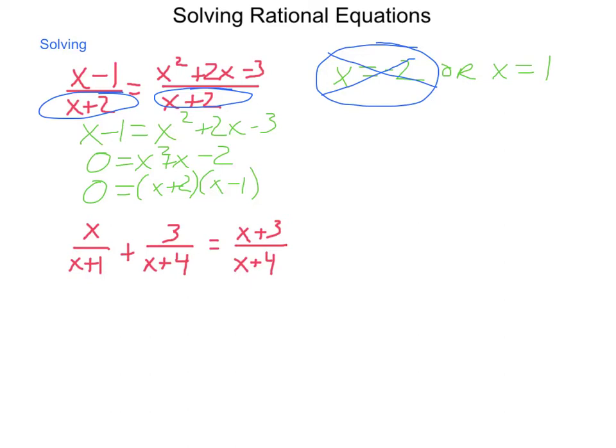Now the next one is a little bit more complicated. We're going to take x/(x+1) + 3/(x+4) = (x+3)/(x+4). So what is our common denominator here? Our common denominator to be able to add these fractions is (x+1)(x+4).